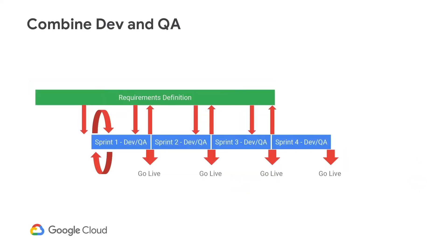The first important tactic to avoid scrum fall is to merge development and QA into one sprint. This likely means you will take on less work in the sprint to give time for bug fixing. But with testing and fixing merged into the sprint, you have tested and ready-to-release functionality at the end of each sprint. This gives us the real ability to pivot. Make this your first goal for the team.